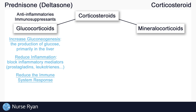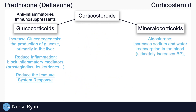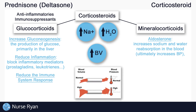Mineralocorticoids are important for water and electrolyte balance. Electrolytes like sodium and potassium are technically minerals, so that's where mineralocorticoids get their name from. The main mineralocorticoid is aldosterone. Aldosterone affects water and electrolyte balance by increasing sodium and water reabsorption back into the blood. The more water in the blood, the higher the blood volume, and the higher the blood volume, the higher the blood pressure. It is also important to note that aldosterone increases the excretion of potassium. So aldosterone increases sodium and water reabsorption, which increases blood pressure, and it decreases potassium.